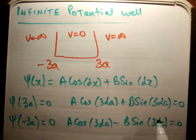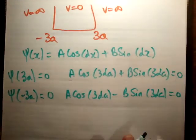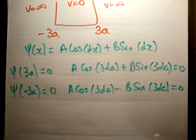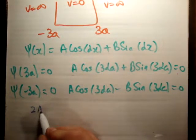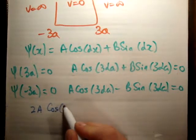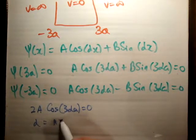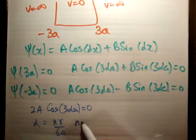Sine is an odd function, so sine of the negative is negative. Next we solve this, and we'll find that 2A cos(3λa) equals zero. Therefore, λ equals nπ over 6a, where n is equal to odd.